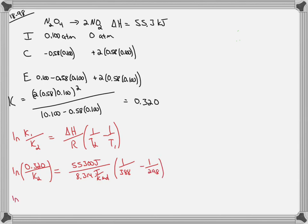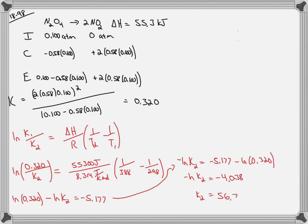Now we have a single equation with one unknown and we can solve for K2. A little algebra here, all of this is going to be equal to negative 5.177. We then subtract this from both sides and we'll get negative K2 is equal to negative 4.038 and K2 then becomes 56.7.